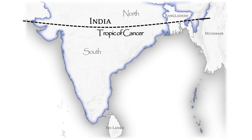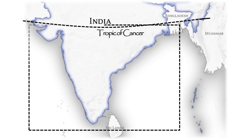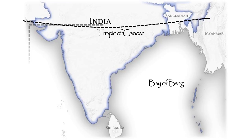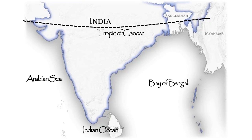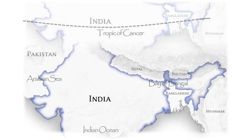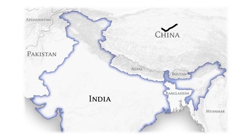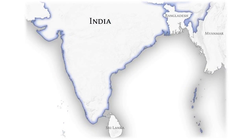The Tropic of Cancer passes almost exactly through the center of India, dividing it into two halves — the northern half and the southern half. The southern half lies between the Bay of Bengal, the Arabian Sea, and the Indian Ocean. The Bay of Bengal is to the east, the Arabian Sea is to the west, and the Indian Ocean is to the south. India and China are separated by a line called the McMahon Line.